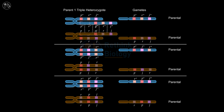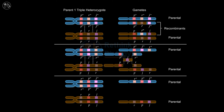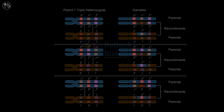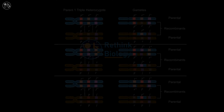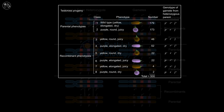The gene order was determined by the progeny class resulting from a double crossover involving all three genes. A double crossover event changes the arrangement of the middle gene. Double crossover events are less frequent than single crossover events, so the double crossover gametes are the least common among the phenotypic classes.